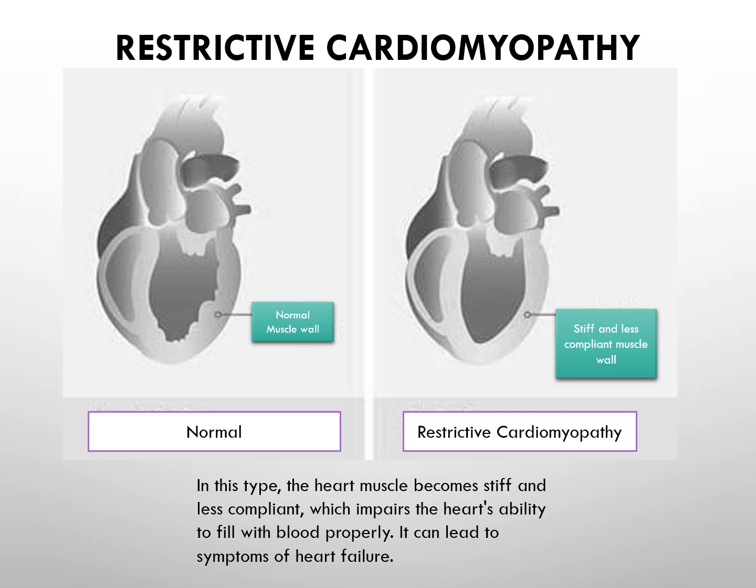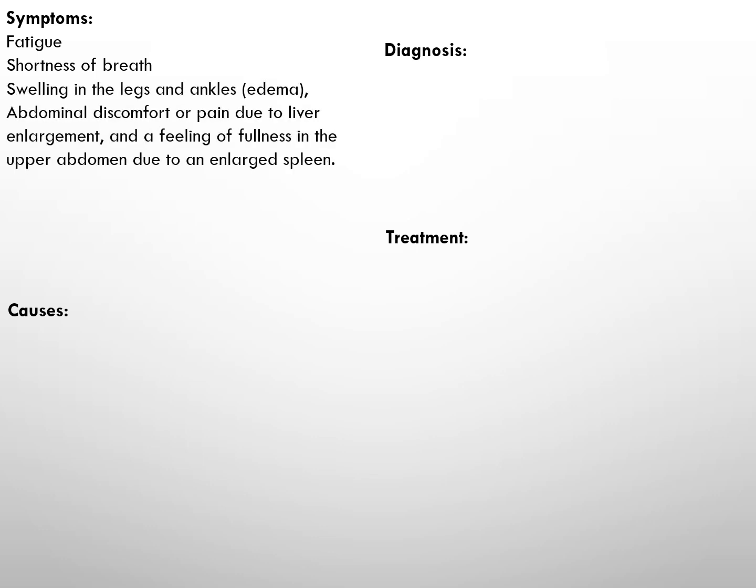In restrictive cardiomyopathy, the heart muscle becomes stiff and less compliant, which impairs the heart's ability to fill with blood properly, and it can lead to symptoms of heart failure. Symptoms may include fatigue, shortness of breath, swelling in the legs and ankles, abdominal discomfort or pain due to liver enlargement, and a feeling of fullness in the upper abdomen due to enlargement of the spleen.